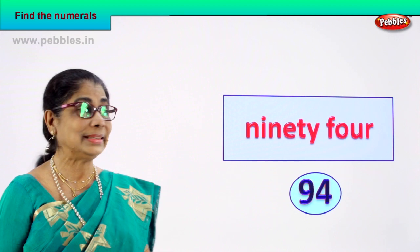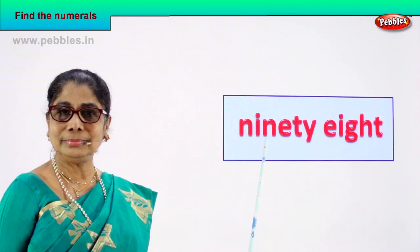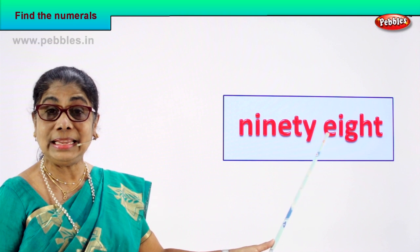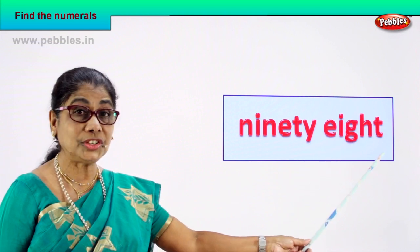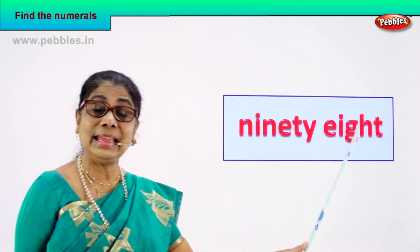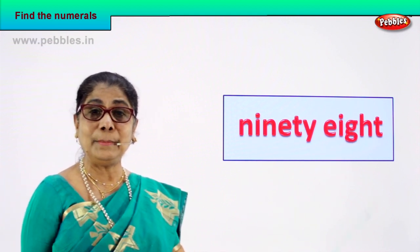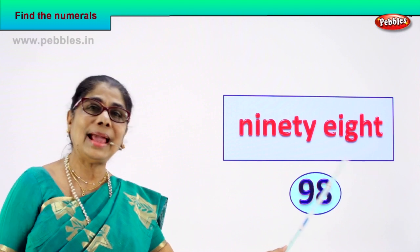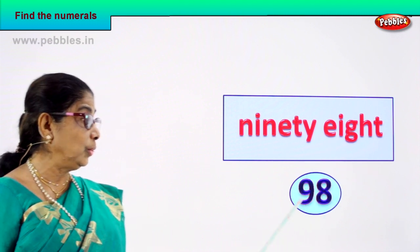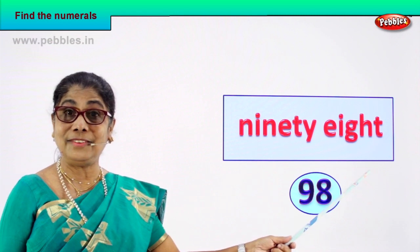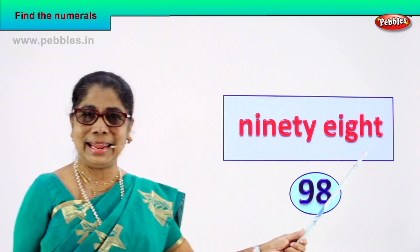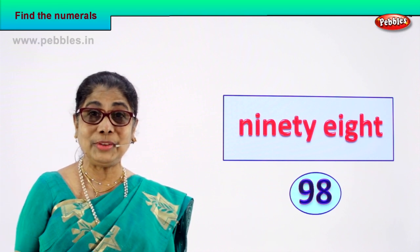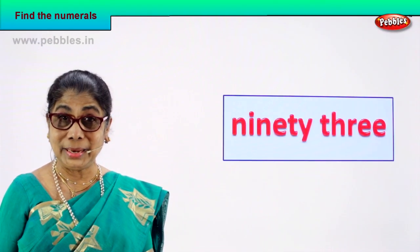Shall we take another number name? Here we are. Read: N-I-N-E-T-Y is ninety, E-I-G-H-T is eight — 98. That is the number name. Where is the numeral? 98 — how could you write this? 9 and 8 — 98. Very good! So you learn the numeral and its name: 98 is written as 9 and 8.